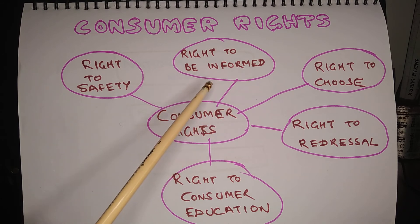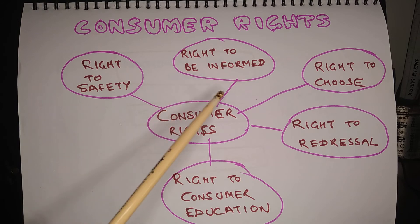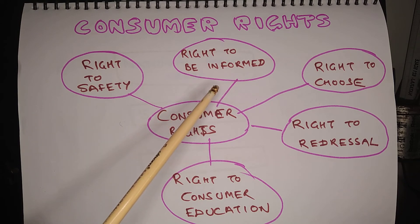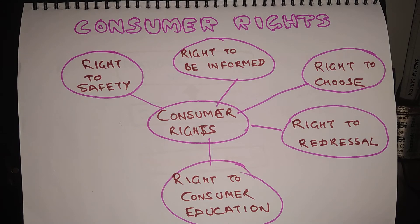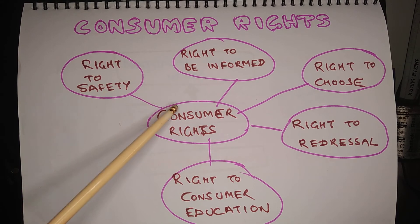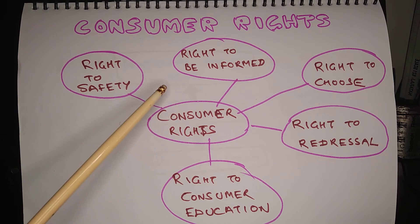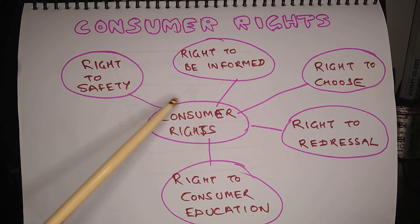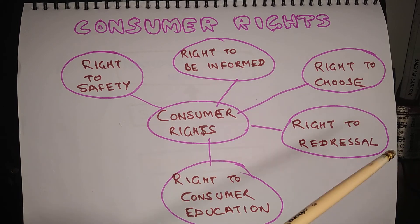As far as the right to be informed is concerned, there are many products where you need to be aware of the ingredients being used. For example, on a medicine packet you will find the names of all ingredients along with the date of manufacturing and date of expiry. Nowadays, certain food items also need to mention the best-use-by date, so if you are buying a packet of sliced bread, you will find the use-by date on it, indicating when it is no longer safe to consume.